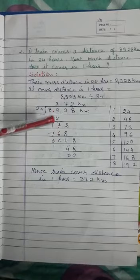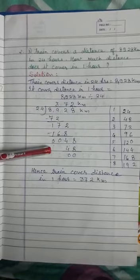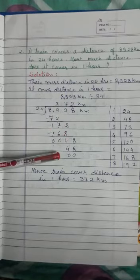24 times 3 is 72. Now subtract to get 17. Bring down 2 to get 172. 24 times 7 is 168. Subtract: 172 minus 168 is 4. Bring down 8 to get 48. 24 times 2 is 48.